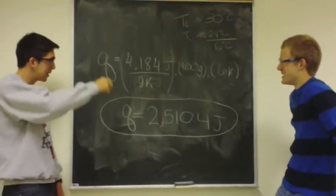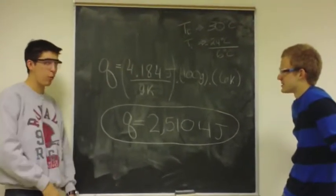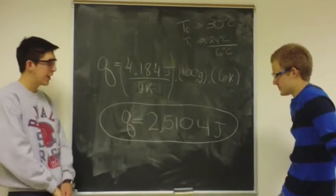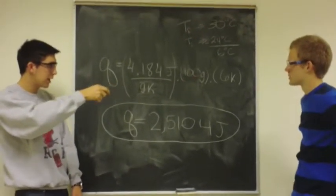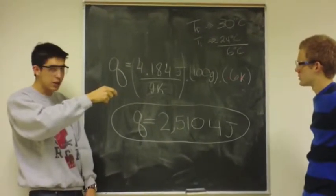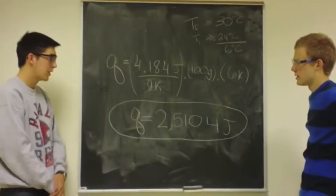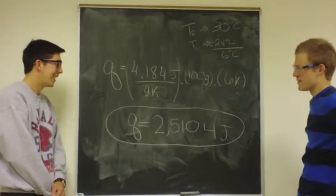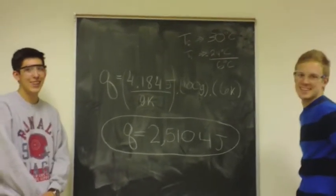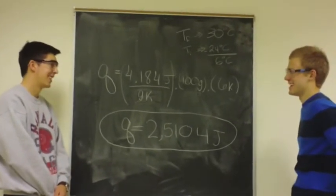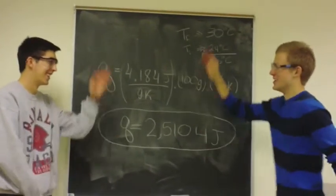We have our specific heat of water, known to be 4.184 joules per gram kelvin, and our mass of the system, 100 grams, and our change in temperature, 6 degrees kelvin. What does that give us, Dean? 2,510.4 joules. That's a lot of joules. Is it? Yeah. Cool!